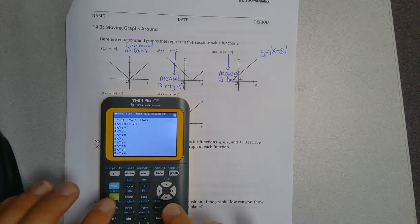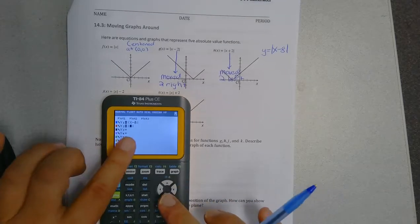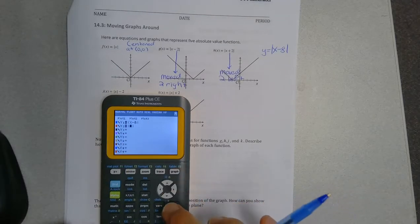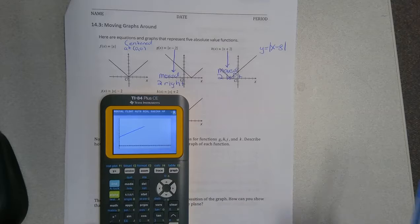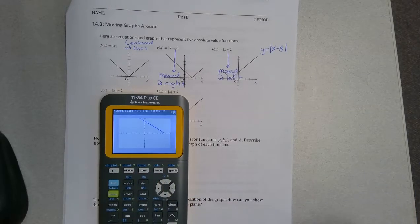And to put that in your calculator, you can press math number abs will give you the absolute value function. And you just type in x minus 8. And then let me change my viewing window to just a standard or zoom 6.